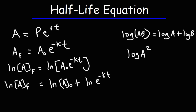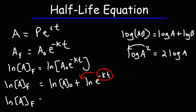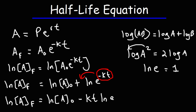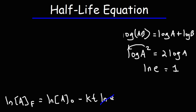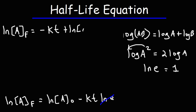Another property of logs, known as the power rule, allows us to move the exponent to the front. So log(A squared) is the same as 2 log A. We're going to take the exponent negative KT and move it to the front, giving us: LN(A final) equals LN(A initial) minus KT times LN(E). Since the natural log of E equals one, that term simplifies away, and we can rewrite the equation in slope-intercept form: LN(A final) equals negative KT plus LN(A initial).